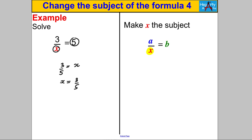When we do this question — can you change the subject of the formula, make X the subject of a over X equals B — I know in a case like this I can multiply both sides by X and then divide by B, or I know that the X and the B basically change position. So X is going to equal a divided by B. I write it with X on the left-hand side: X is a over B.